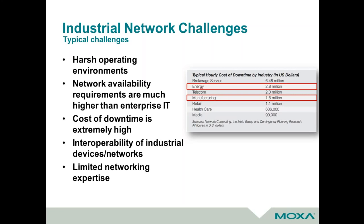Along with that, the cost of downtime can run into the millions of dollars an hour, so designing to minimize unplanned outages is critical. Interoperability is another pervasive issue, as companies seek to bring separate systems consisting of various industrial protocols, serial technologies, and discrete I/O together into a common network. And finally, we often see that the people who are held accountable for keeping the plant up and running don't have deep IT or networking experience.